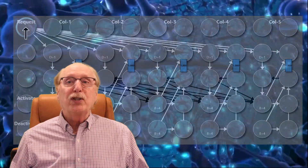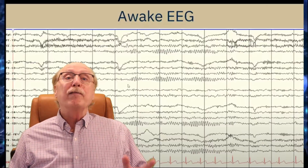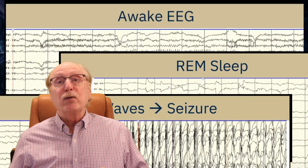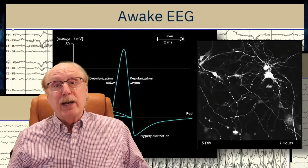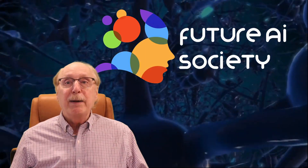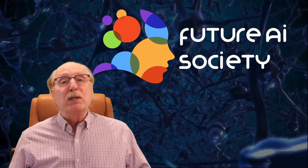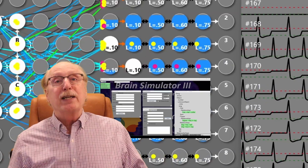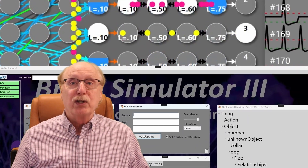I'm Charles Simon, long-time AI researcher, software developer, and manager. Beyond AI, I've developed software for neurological test instruments and neural simulators. I created the Future AI Society to explore how neuroscience can inform smarter, more human-like AI. And I'm using our open source brain simulator projects for simulations and demonstrations throughout this video series.